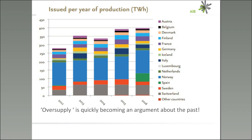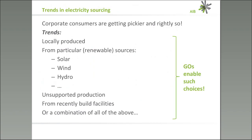In this graph you can see that the sources of guarantees of origin are very diverse. Norway is typically a very important — the biggest — producer of guarantees of origin because they have a lot of hydro. You also see in the 2016 column that Spain entered the system and immediately became significant.